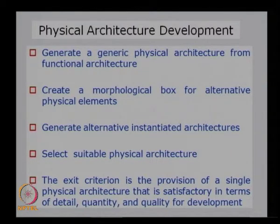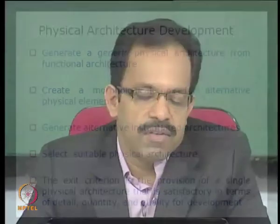From the generic physical architecture, in order to identify the actual physical elements, we create a morphological box for alternative physical elements. The morphological box is a tool for developing alternatives for physical components. We identify generic components in the generic physical architecture, develop the morphological box to find many alternatives for each component, and then choose the component.